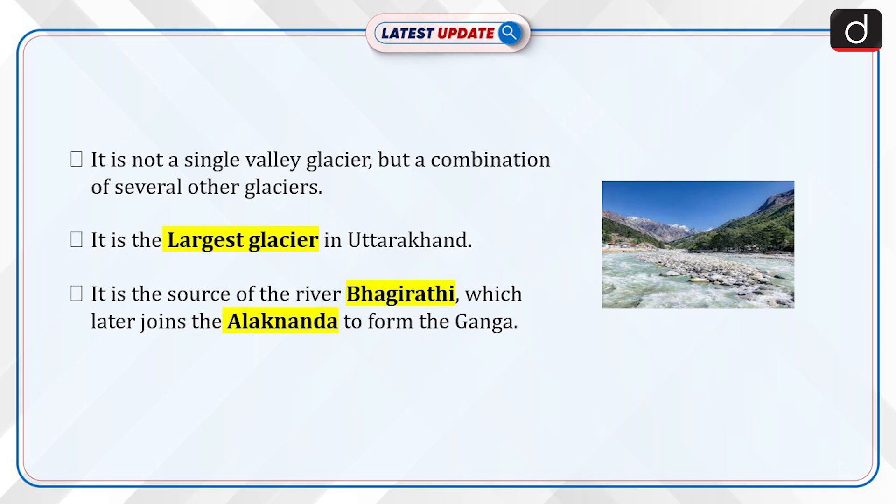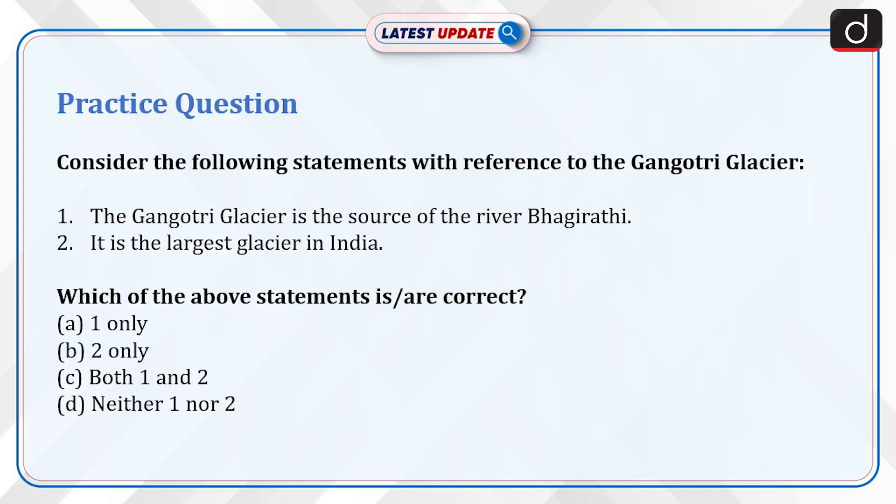Now it's time to do a practice question. Consider the following statements with reference to the Gangotri Glacier. Statement 1: The Gangotri Glacier is the source of the river Bhagirathi. Statement 2: It is the largest glacier in India. Which of the above statements is correct? A. One only. B. Two only. C. Both one and two. D. Neither one nor two. Send the answer for this question in the comment section.